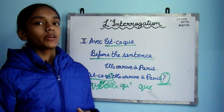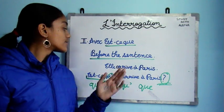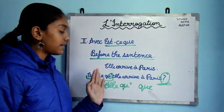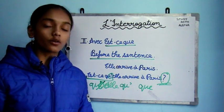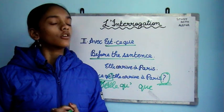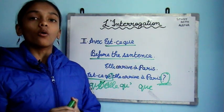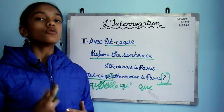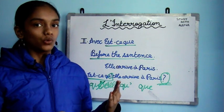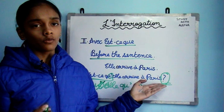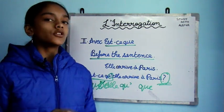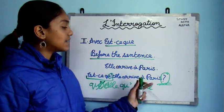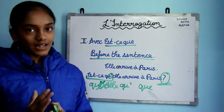Est-ce que literally means 'is,' but its translation varies from sentence to sentence. For example, 'elle arrive à Paris' means 'she is coming from Paris,' and with est-ce que it becomes 'is she coming from Paris?' Another example: 'est-ce que vous jouez au jardin?' — we add est-ce que before the sentence and a question mark at the end.